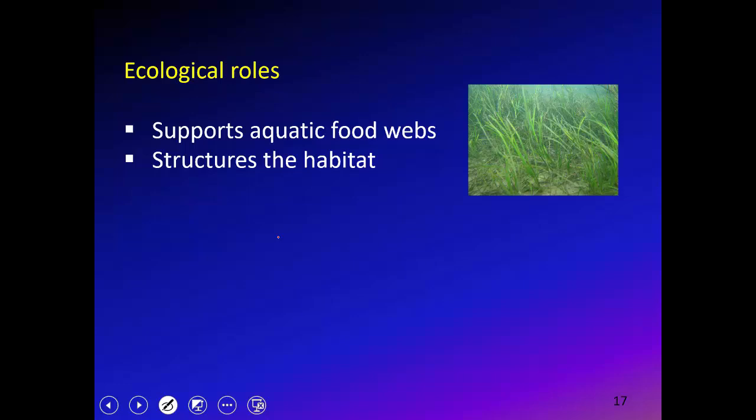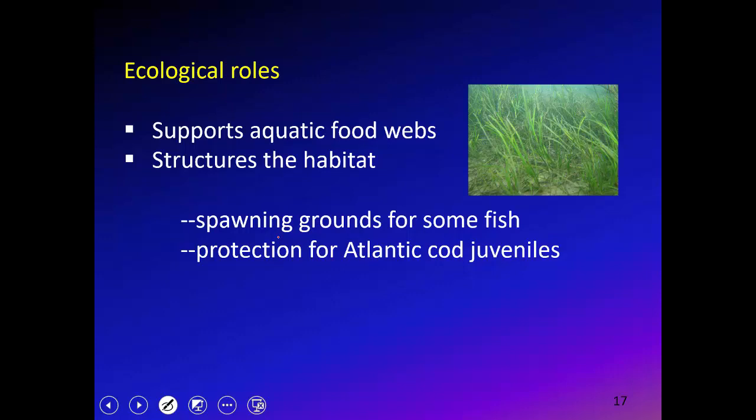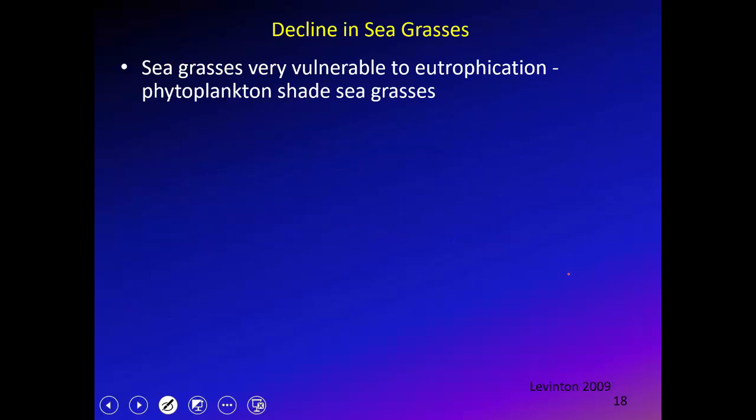Seagrasses support food webs in a similar way to kelp — it's primarily the detritus from the grass, not the grass itself, that supports food webs. The grass also structures the habitat: even if it were just plastic waving in the water, it would provide spawning grounds for fish and serve as a nursery habitat for juvenile fish. It can also provide direct food for birds.